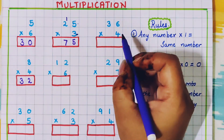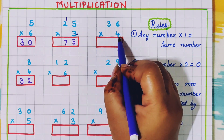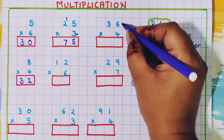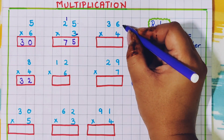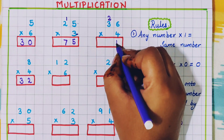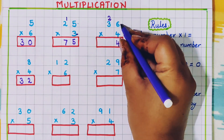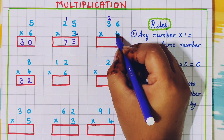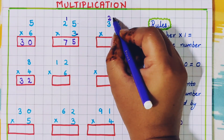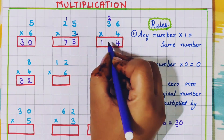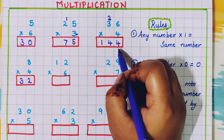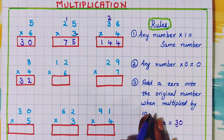Let's understand with one more problem: 36 into 4. First, 4 6s are 24. Since it is a 2-digit number, I will write 2 as carry over and write 4 in the 1s place. Next, 4 3s are 12; now 12 plus carry 2 is 14. So here I will write 14. So 36 into 4 is 144.